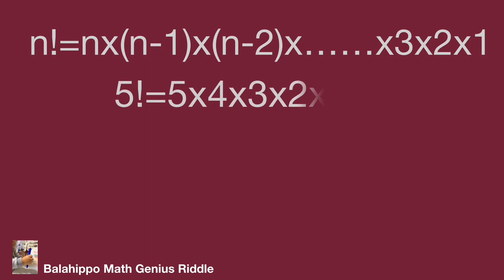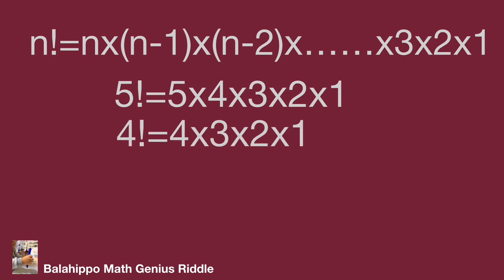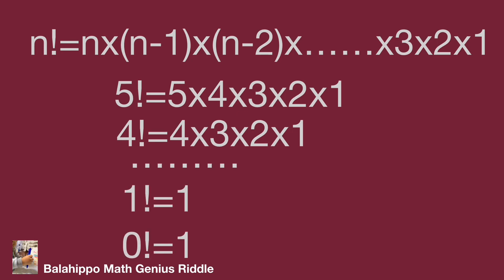5 factorial equals 5 times 4 times 3 times 2 times 1. 4 factorial equals 4 times 3 times 2 times 1. Similarly we can find 3 factorial and 2 factorial. And 1 factorial equals 1. As for 0 factorial, it may not be well defined, but we treat 0 factorial equal to 1.